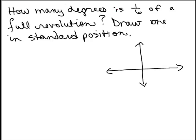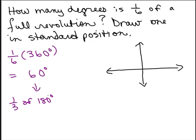So how many degrees is one-sixth of a full revolution? And try drawing one in standard position. One-sixth of 360 degrees is 60 degrees. What would that look like? It's one-sixth of a full revolution. Here's the way I think of it. From here to here, all the way over here, that's 180 degrees, that is half a revolution. And now I want 60 degrees, that's one-third of that. So I think of this as one-third of the 180 degrees.